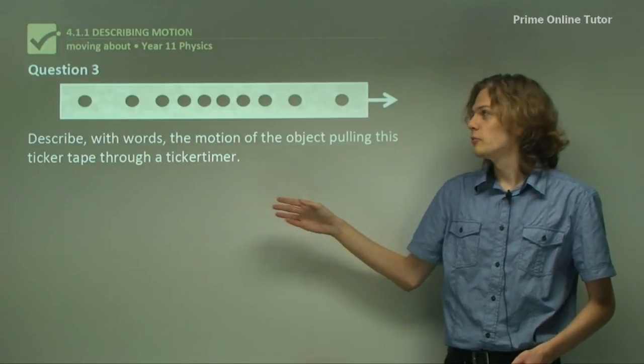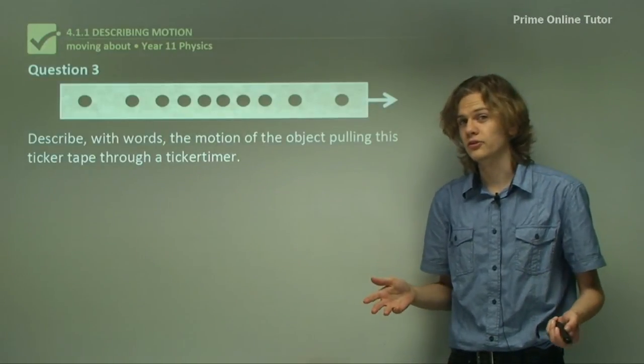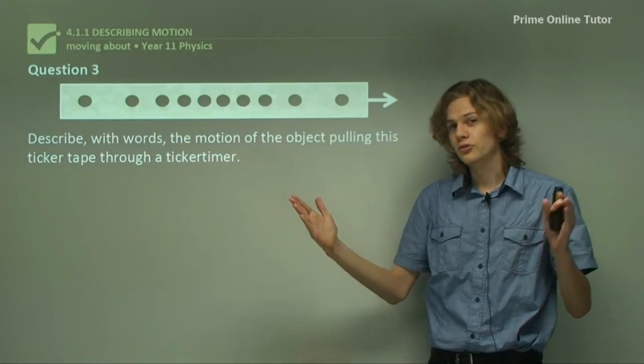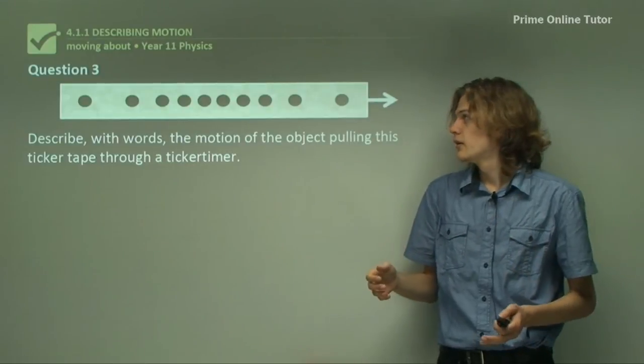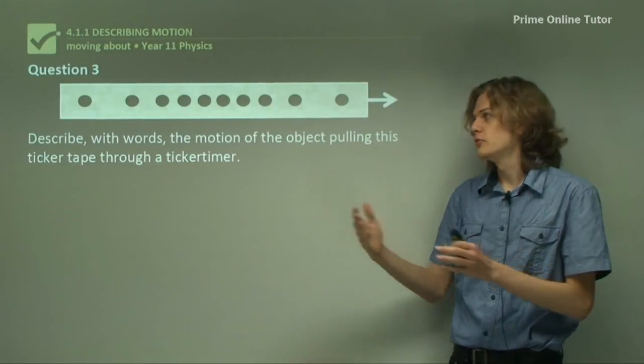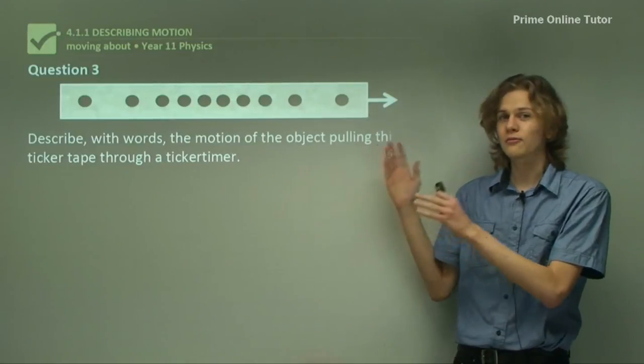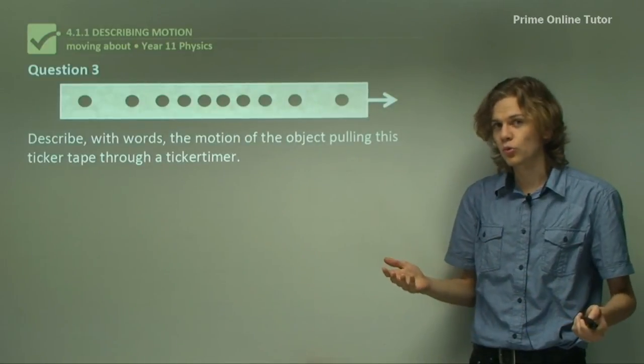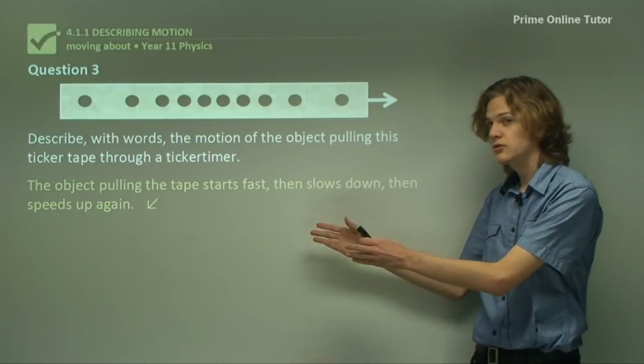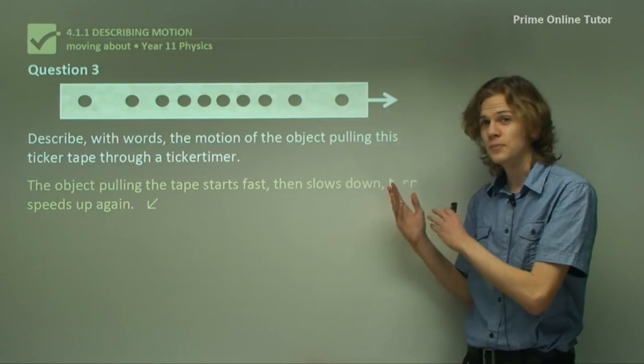The first few dots are quite far apart. So that means that the object was initially moving quite quickly through the ticker timer. As we progress along the tape, the dots get quite close together. And finally, at the end of the tape, they're far apart again. So this means that the object must sort of slow down in the middle and then get faster. And so putting this down in words, we have something like this. The object pulling the tape starts fast, then slows down, and then speeds up again.